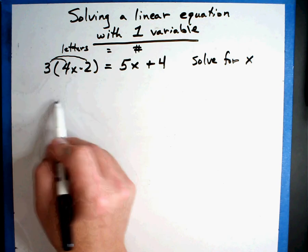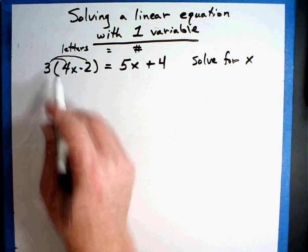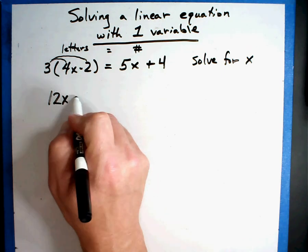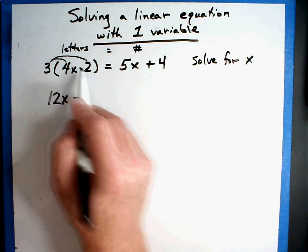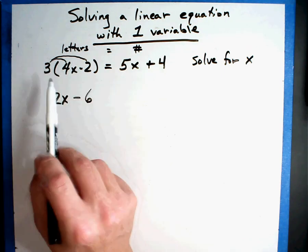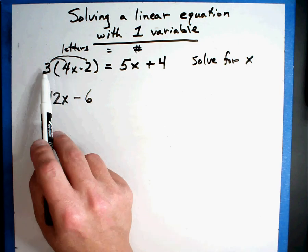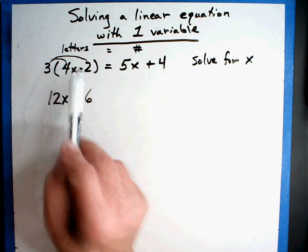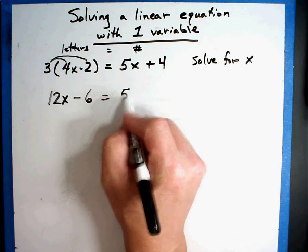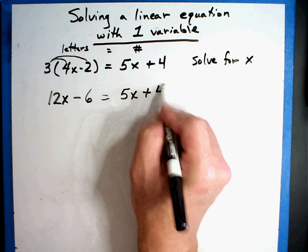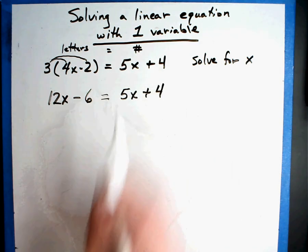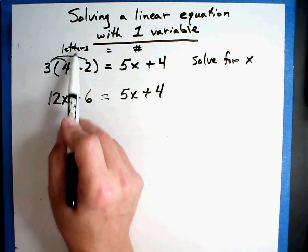Three times 4X is, three times four is twelve, so we get 12X minus three times two is six. Now remember if you look at your rules, that's a positive and a negative is a negative, so 12X minus 6 equals 5X plus 4. We didn't have to do anything special with what's on the right hand side.